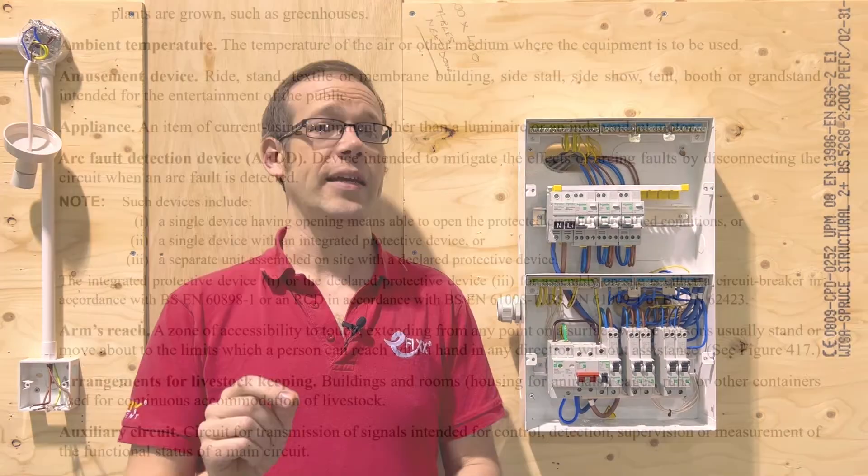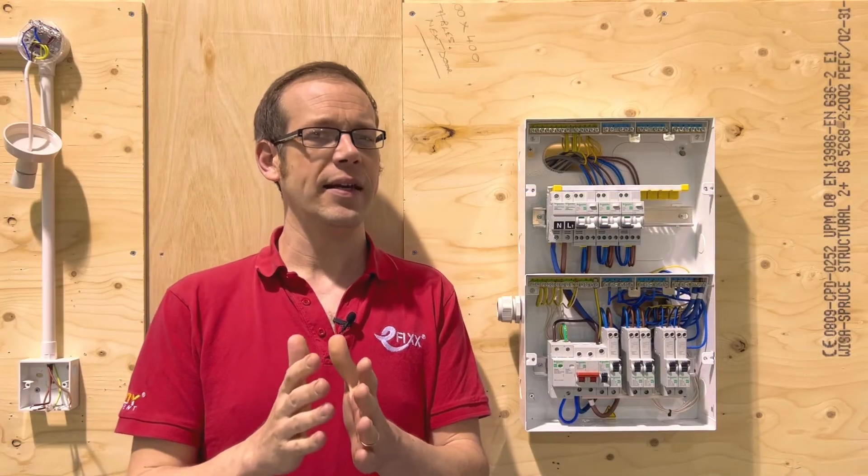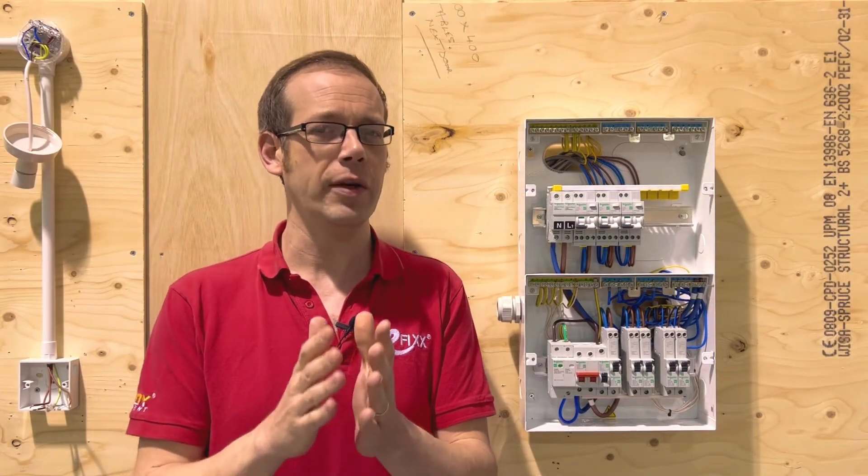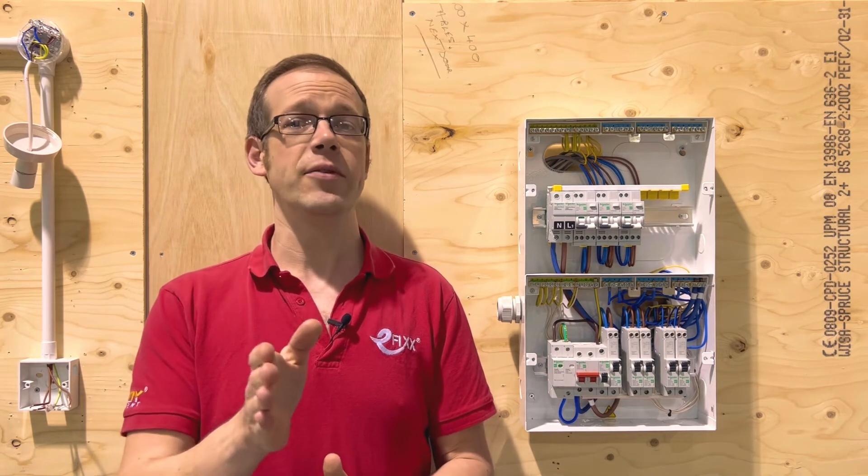But it then goes on to say in the note that such devices include one, a single device having opening means able to open the protected circuit in specified conditions, or two, a single device with an integrated protective device, or three, a separate unit assembled on site with a declared protective device. So indent two there seems to be hinting at the fact that you could get a device offering more than just arc fault protection by itself and this is borne out in the rest of the note.